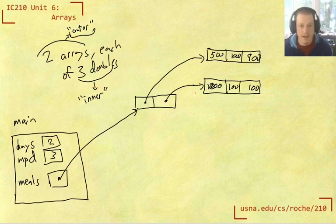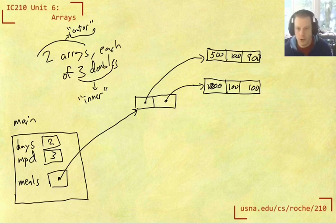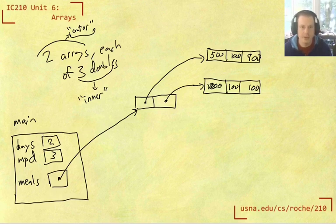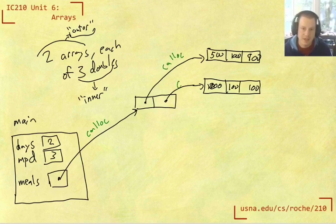Now we have to think about how to actually make this thing. And the important thing to know is that each one of these arrows, when we draw a box and draw that arrow, that is a call to calloc. So we need a call to calloc to make this outer array. But when we do that, it's just going to be two null pointers that don't point to anything. So we have to separately call calloc for each element of that outer array to make the inner array.